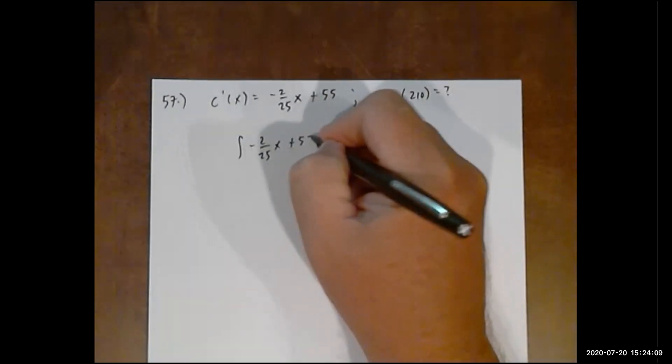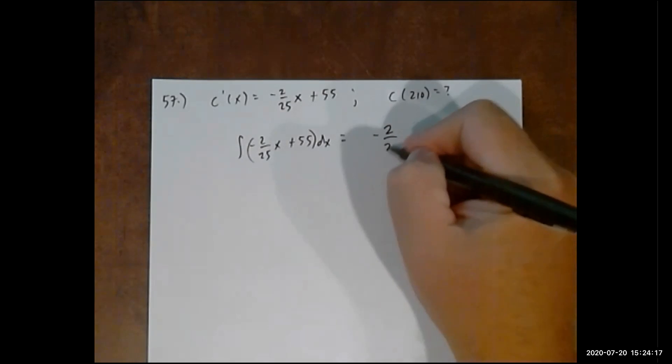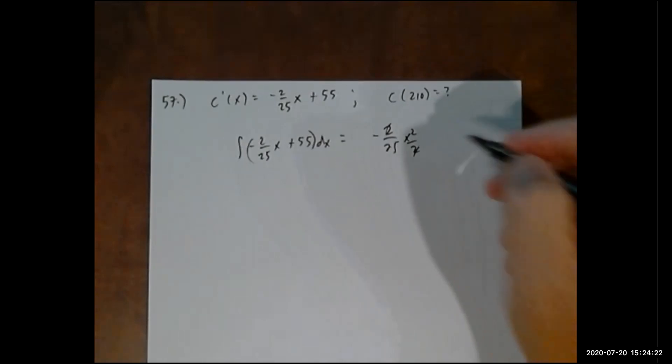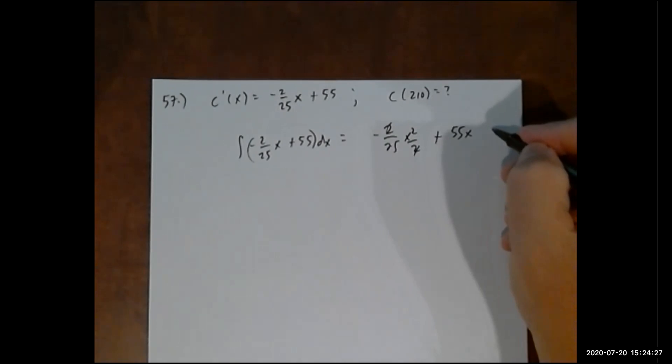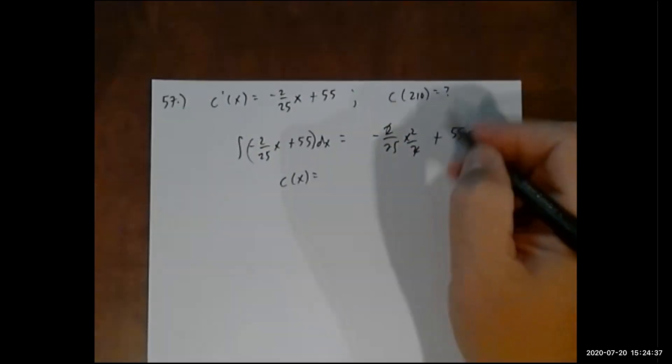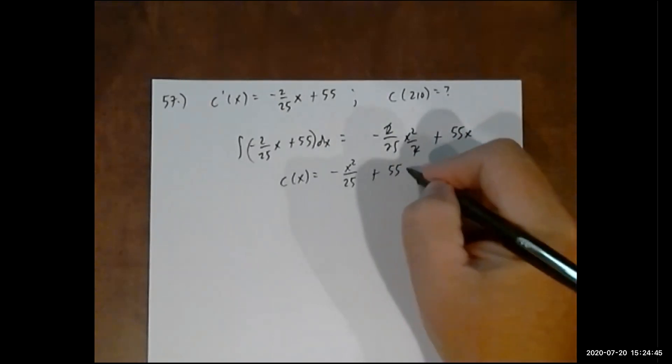The integral of this with respect to x: negative 2 over 25, x squared over 2, so those 2's cancel out, plus 55x. I would put plus C, but they say the fixed cost is zero. So C(x) is negative x squared over 25 plus 55x.